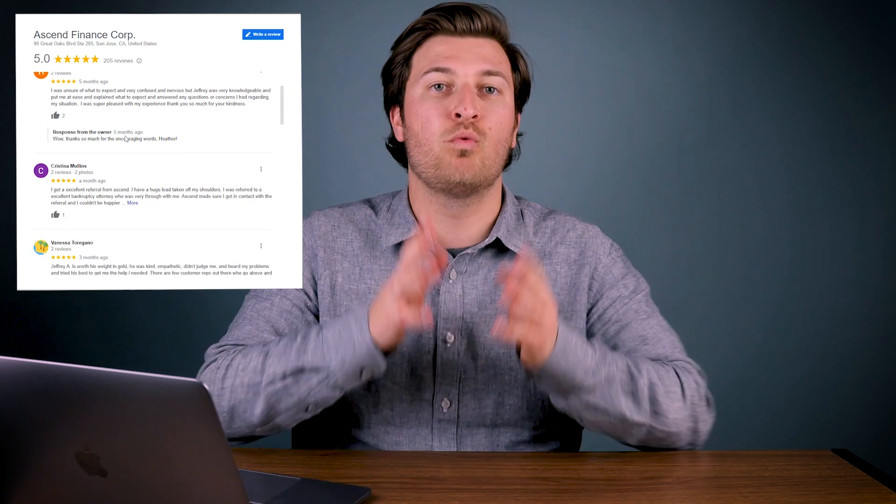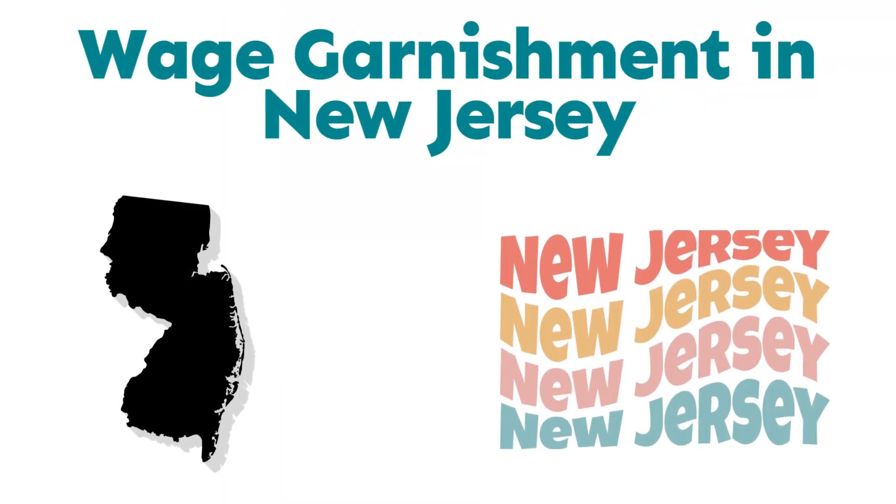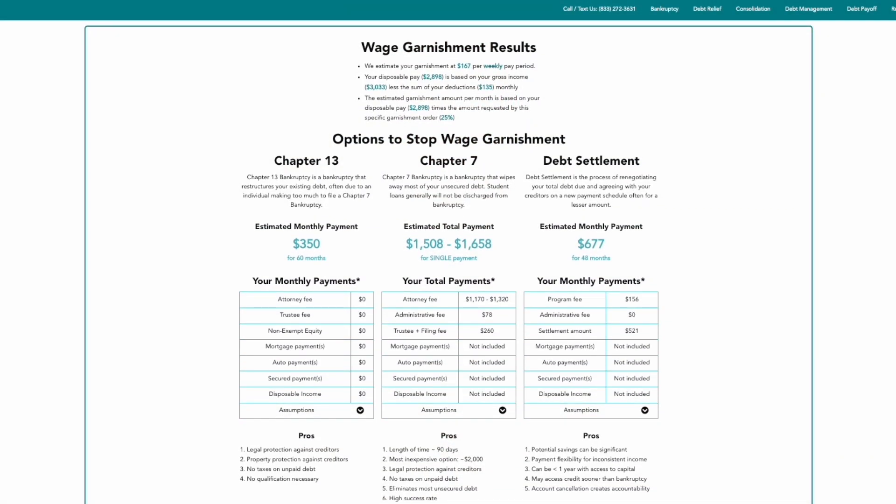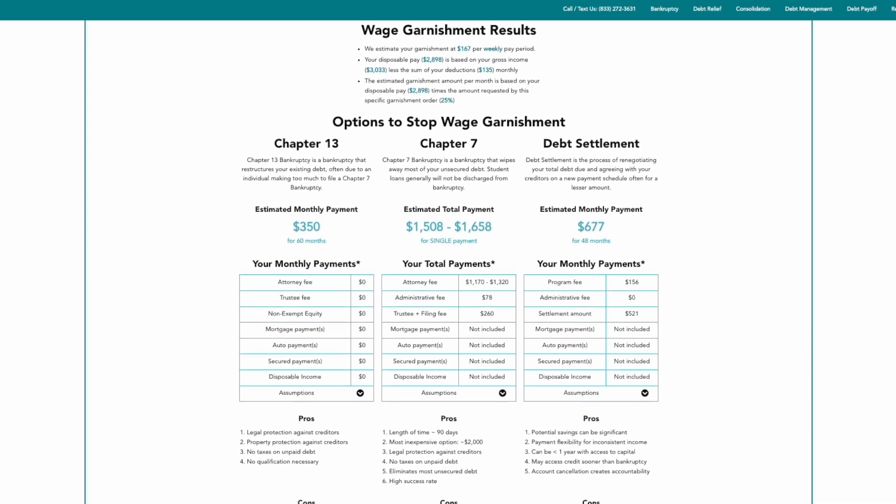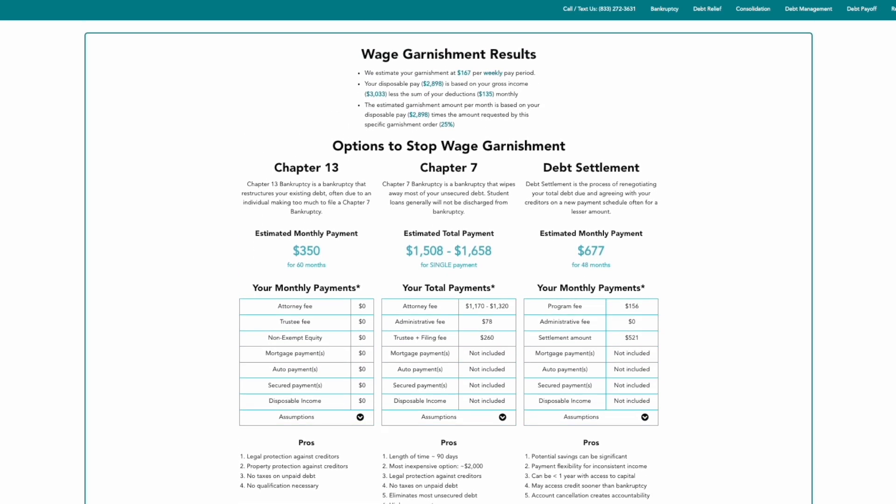Welcome to Ascend Finance's YouTube channel, where we cover wage garnishment in New Jersey and help folks understand their options to resolve. With that said, everyone's situation is unique, and so we built a free New Jersey wage garnishment calculator to help folks see what their options are to stop it, compare the pros and cons to each option, and estimate the cost based on their personalized data. My name is Justin, and I'm one of the analysts here at Ascend. I speak with quite a few folks who are unfortunately facing a garnishment, so I'd love to help you understand the process and options.